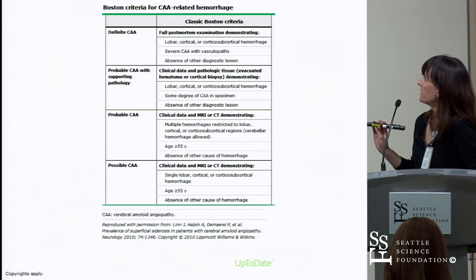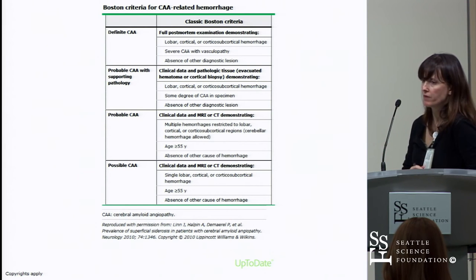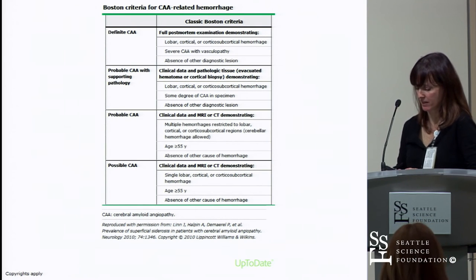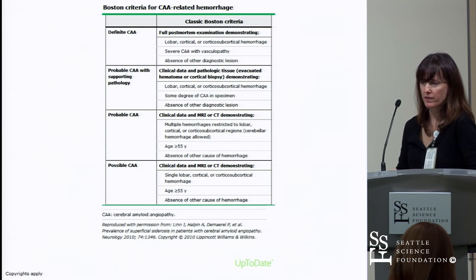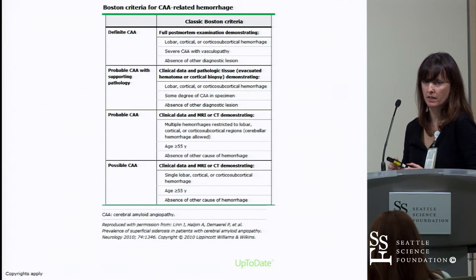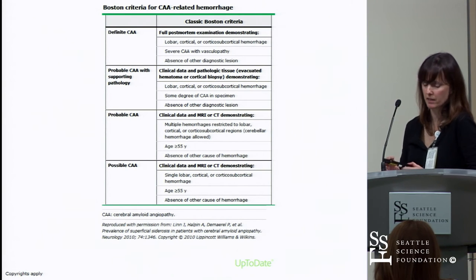Definite cerebral amyloid angiopathy is diagnosed based on postmortem examination showing severe cerebral amyloid angiopathy with vasculopathy. An important caveat: neuropathologists do see some amyloid in the normal aging population, so clinical discretion is required to determine if the patient truly has CAA.